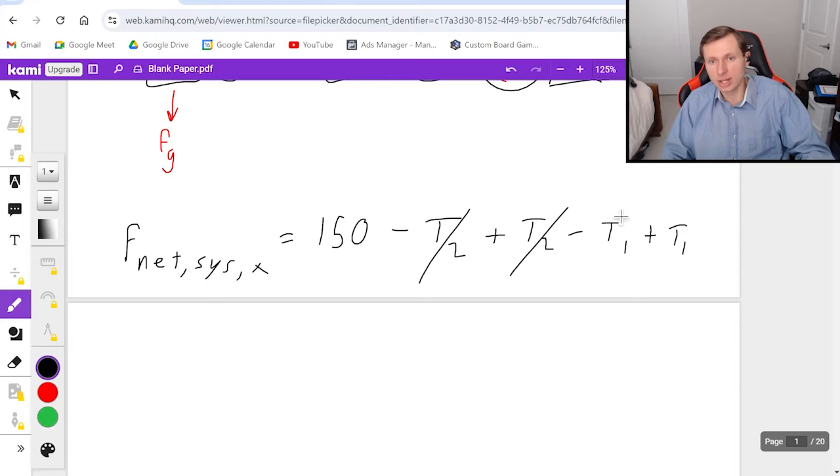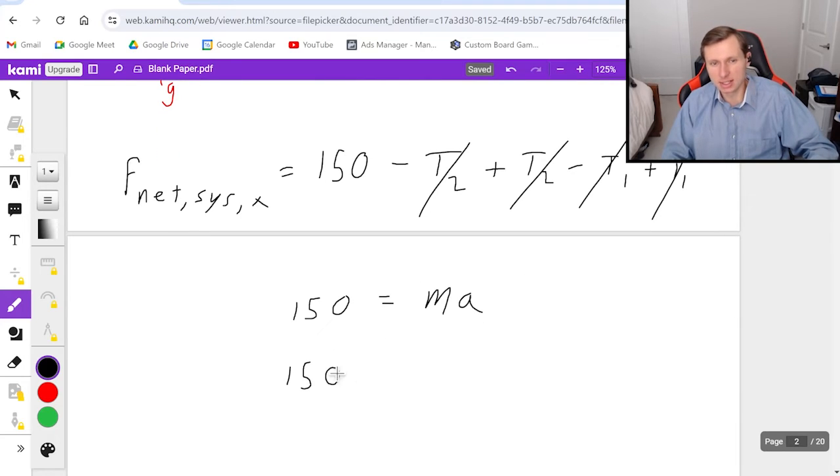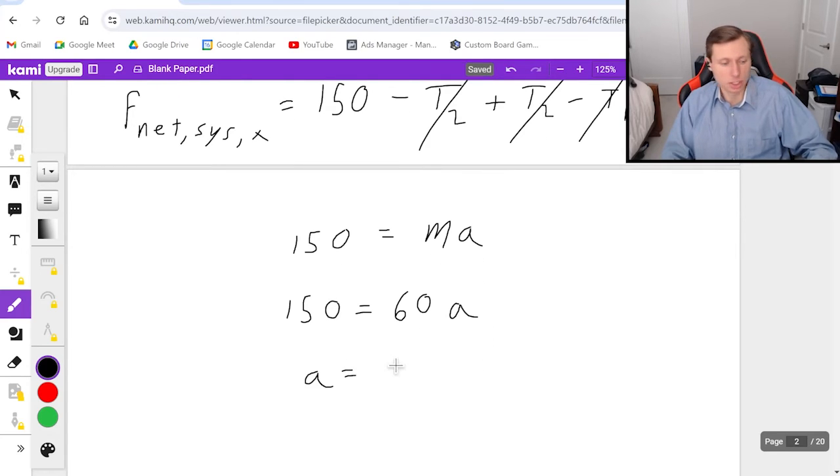And you'll notice that T2 and T1 both cancel. That's why we look at the system first, because that's the only way they're going to cancel. And so then you'll just be left with 150 on the left. And on the right, we have mass times acceleration. Now what mass is this? The answer is all three combined. Since the masses were each 20, 20 times 3 is 60 kilograms, times the acceleration. If we want to solve acceleration, just do 150 divided by 60. And we'll get an acceleration of 2.5 meters per second squared.